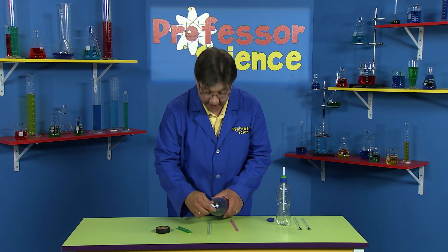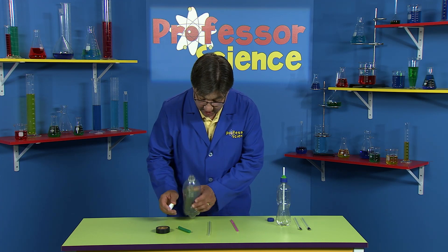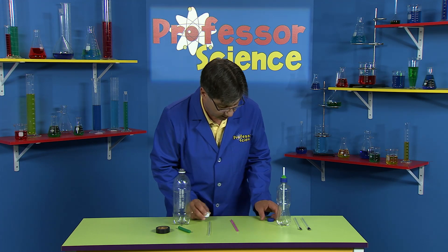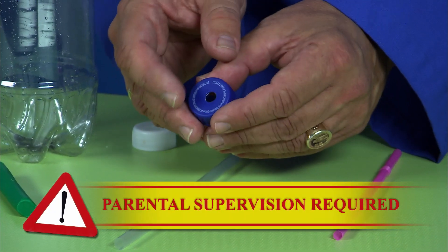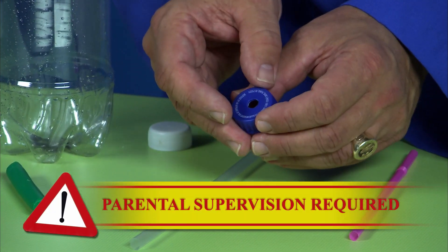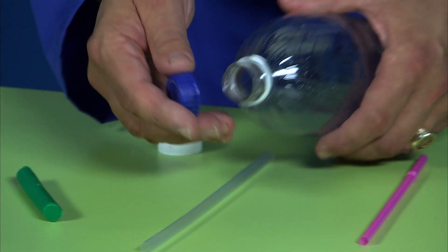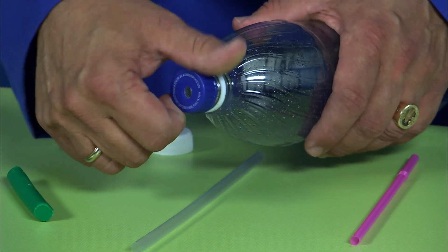So the first thing you need to do is take the cap from the bottle and you need to drill a hole in it like this one right here. But you're probably going to need to ask your mom or dad or an adult to do that for you. Then you take the cap with the hole and you put it back on the bottle.